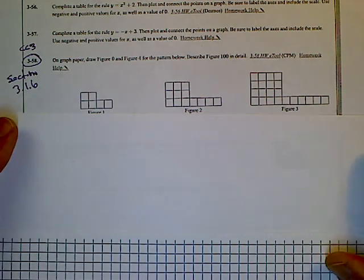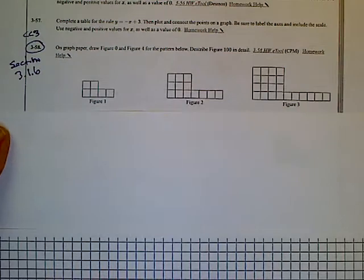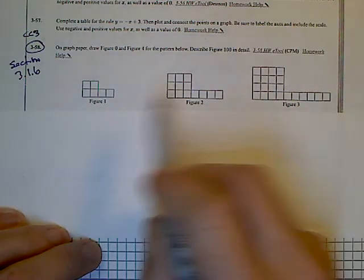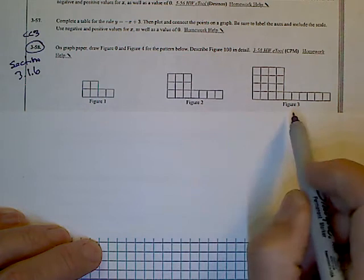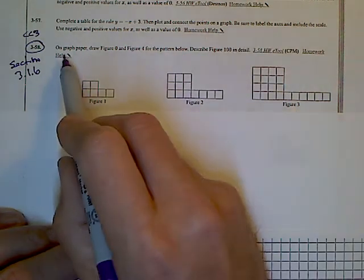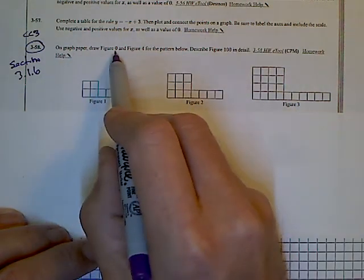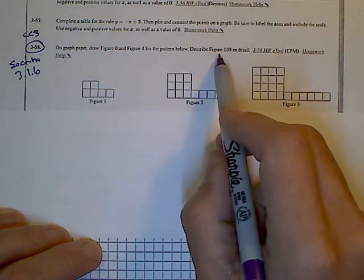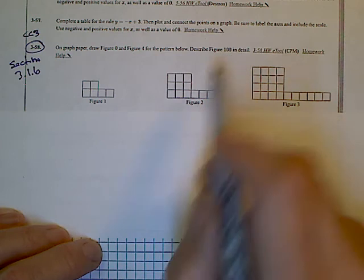So on 3-58, we've got from review preview, we've got a situation where we're looking at three figures, figure one, figure two, and figure three. And it says, on graph paper, draw figure zero and figure four for the pattern below. And then describe figure 100 in detail.